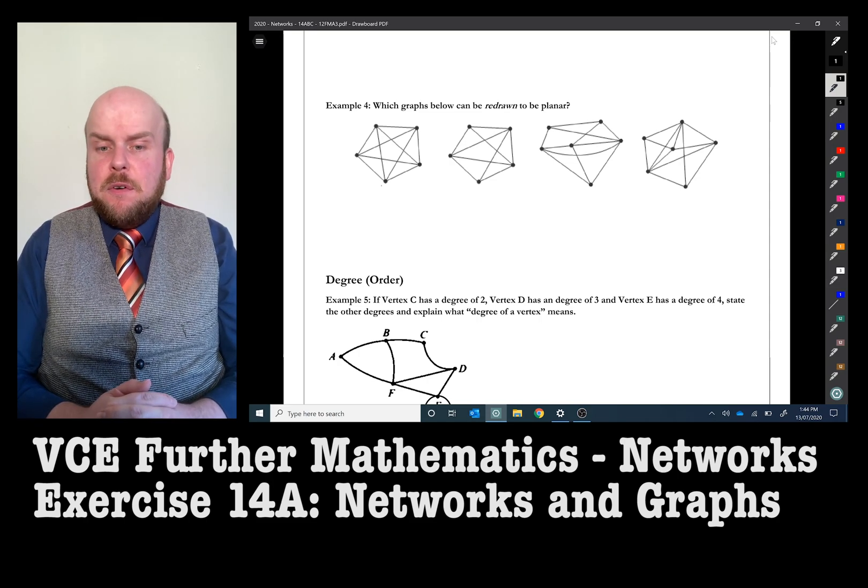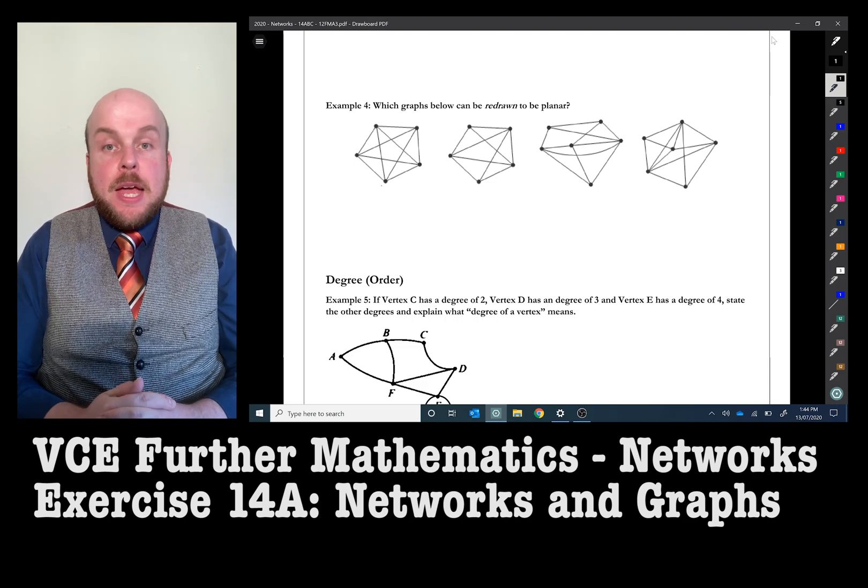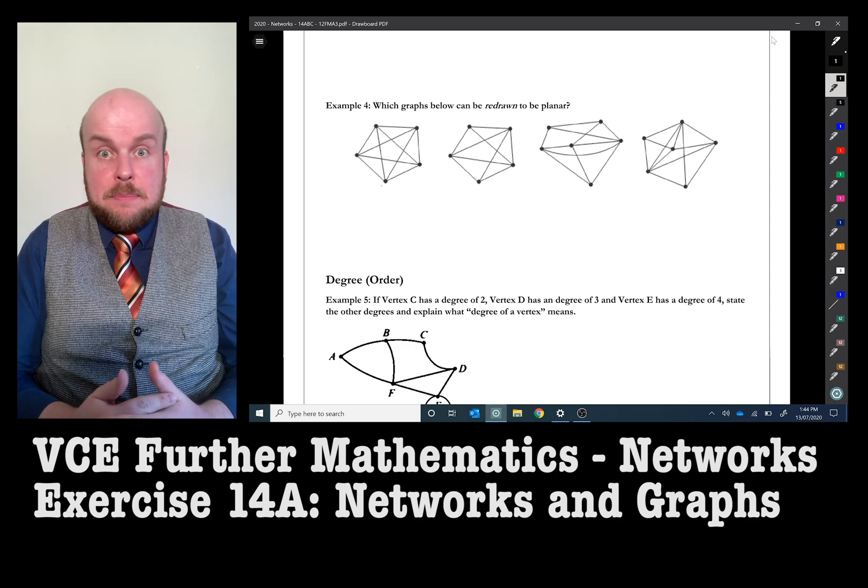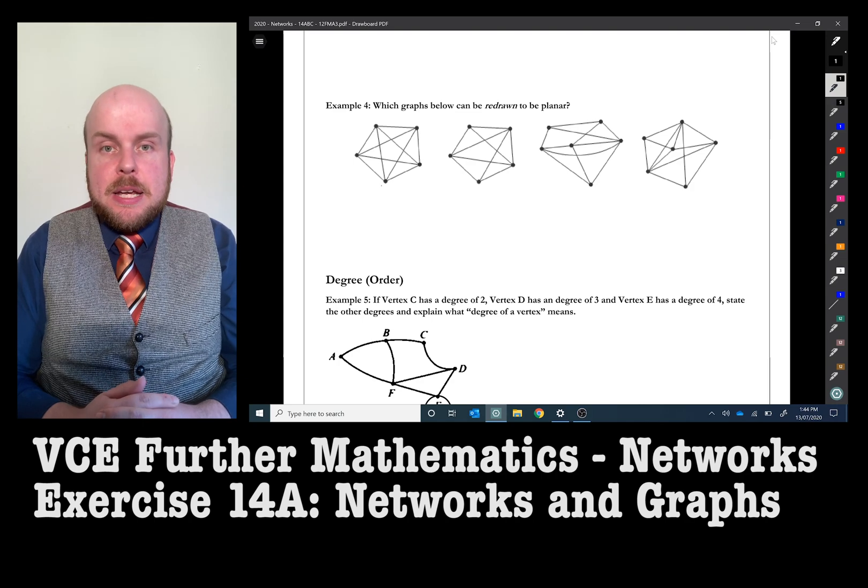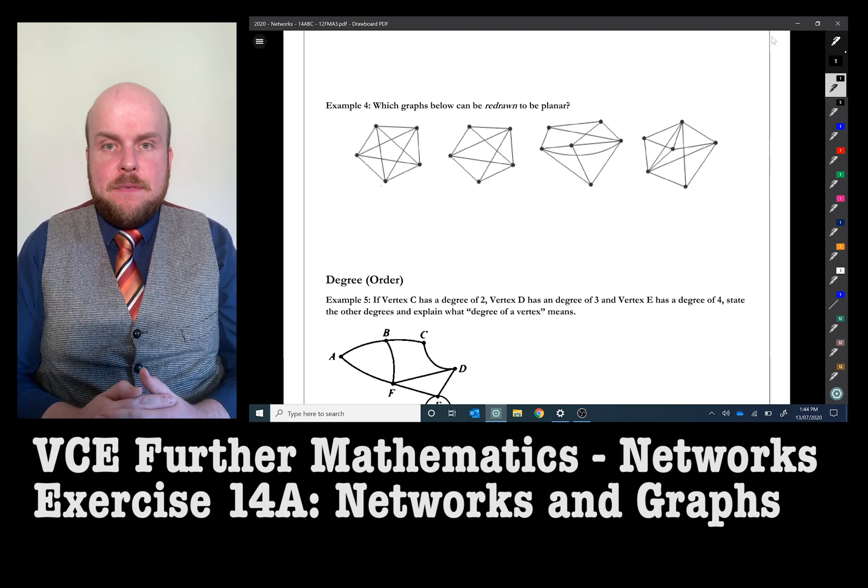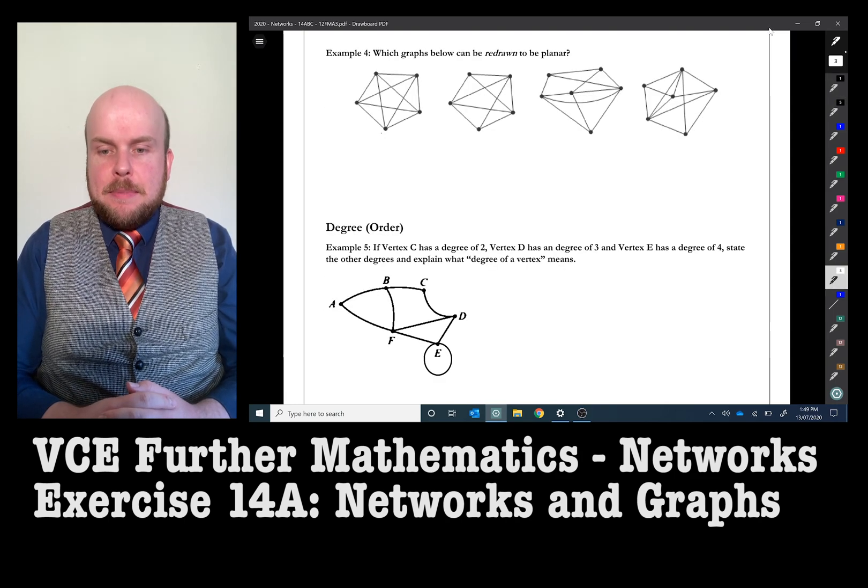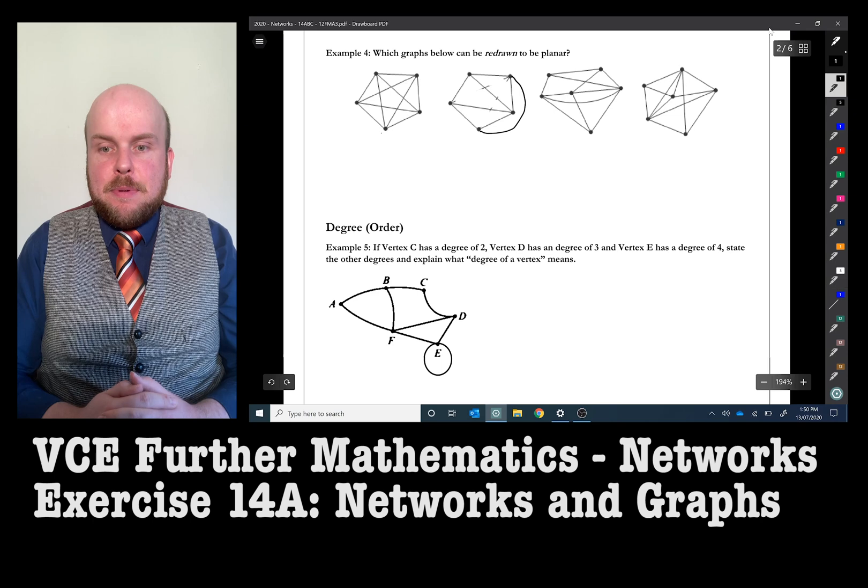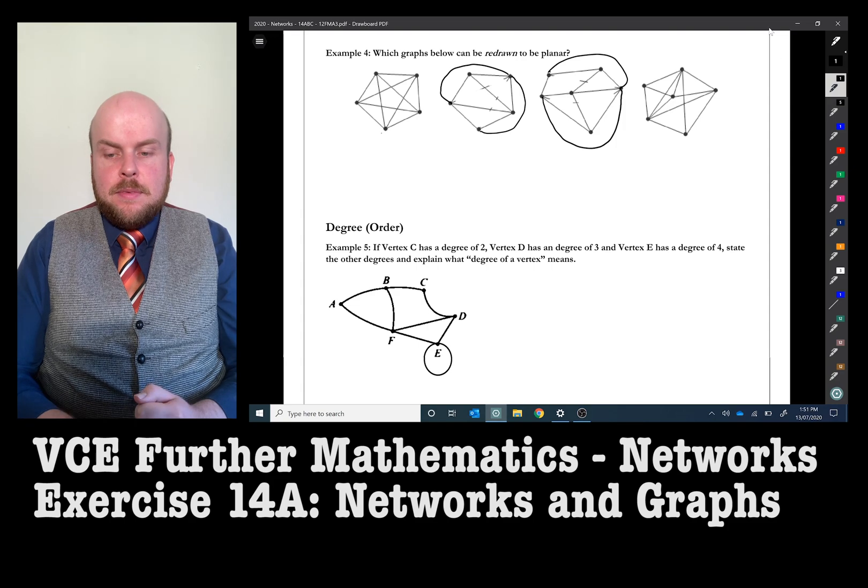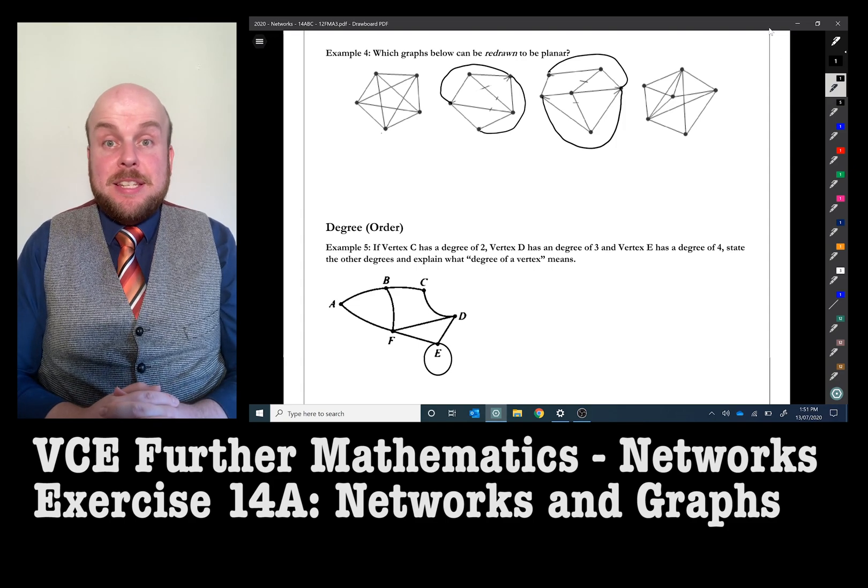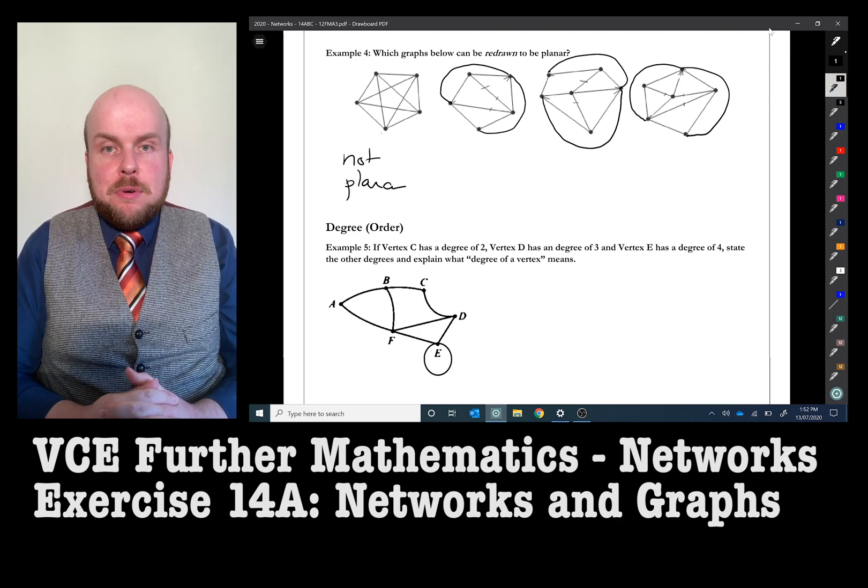In example four, I have asked which graphs can be redrawn to be planar. How you solve this is up to you in terms of there are multiple different solutions. You can either eliminate edges and redraw them or simply move the vertices. As is my previous example, I have chosen to eliminate edges and redraw it that way. Here are my solutions. I have therefore discovered that the first one is not planar because you cannot redraw those edges.